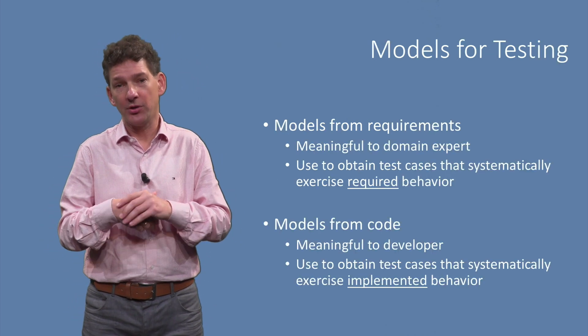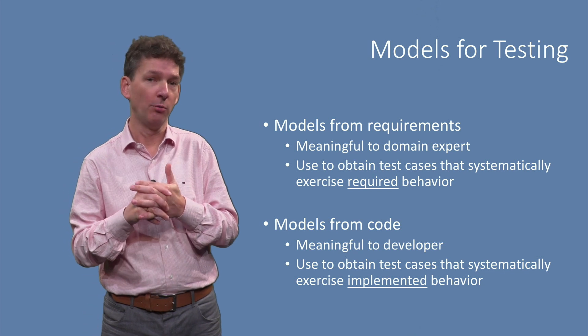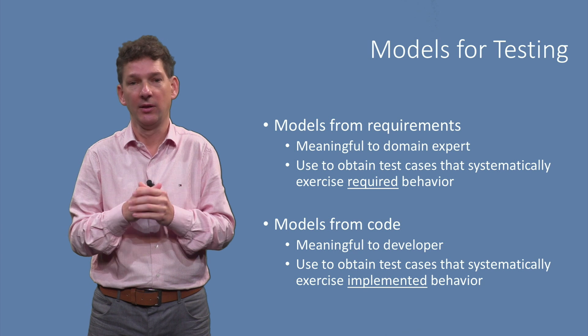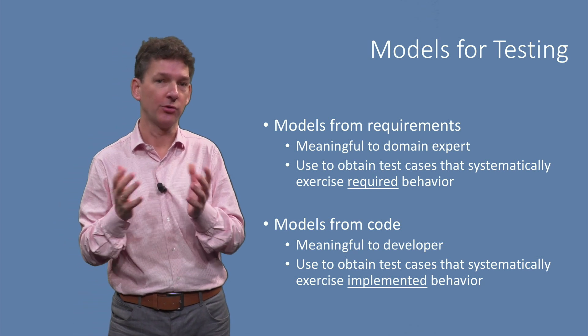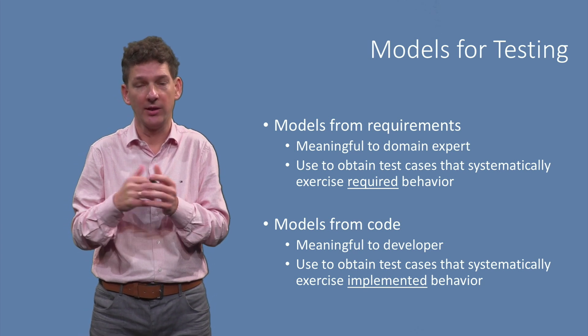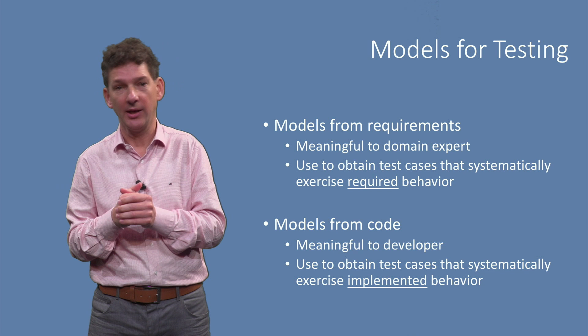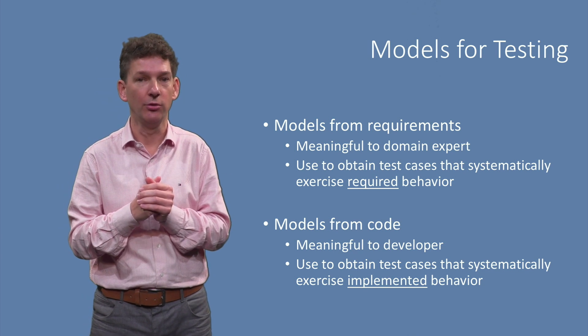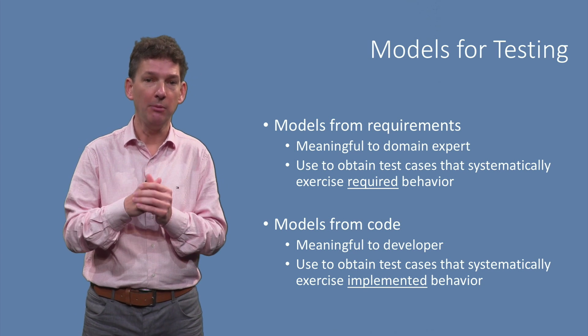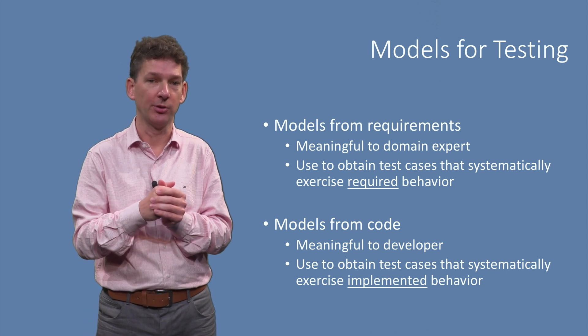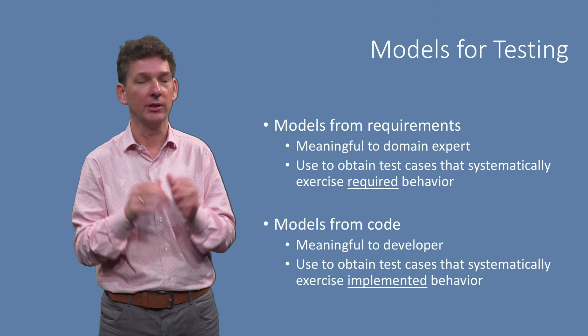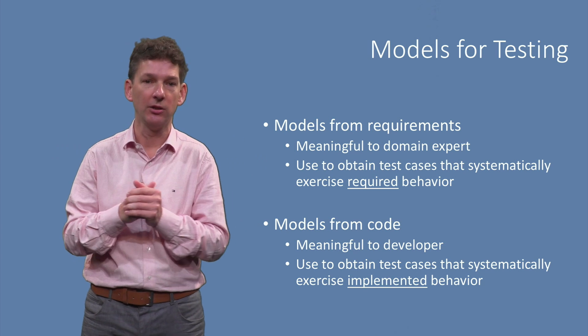Well, both types of models can typically be obtained from the system requirements or the user stories. In fact, they can help to better organize those requirements or user stories. For example, the marketing department at the telco will decide on the plans offered, and can structure their plans using decision tables. Models obtained from requirements are typically meaningful to domain experts, and then developers can use them to identify test cases for behavior that must be there specified in the requirements.